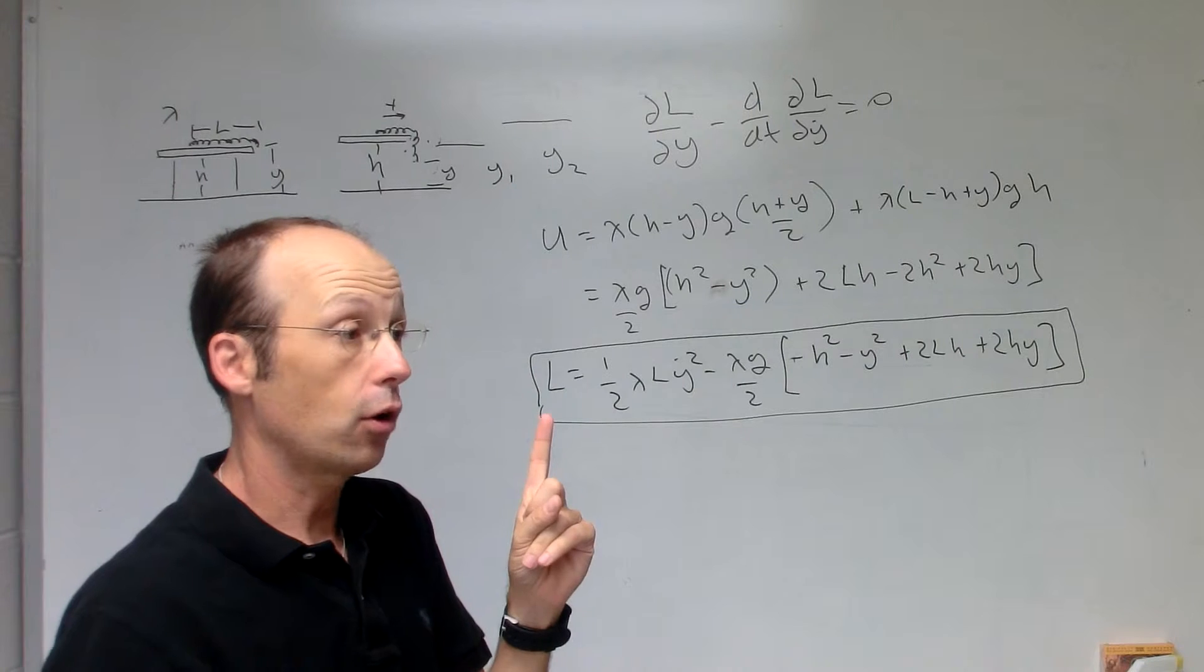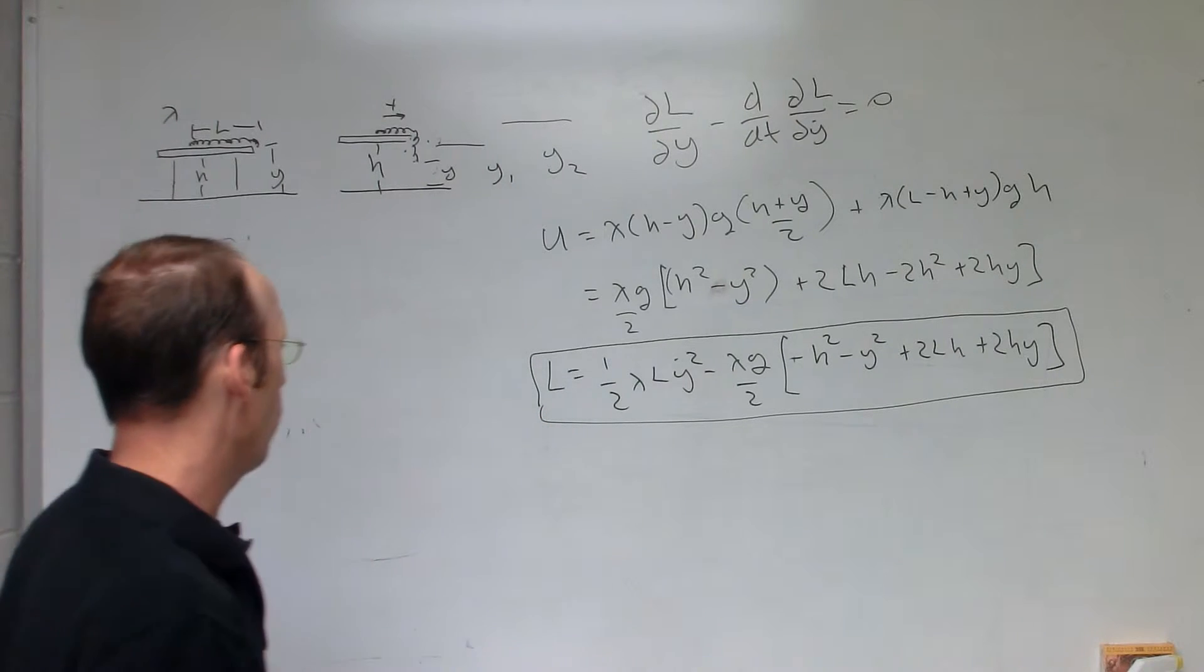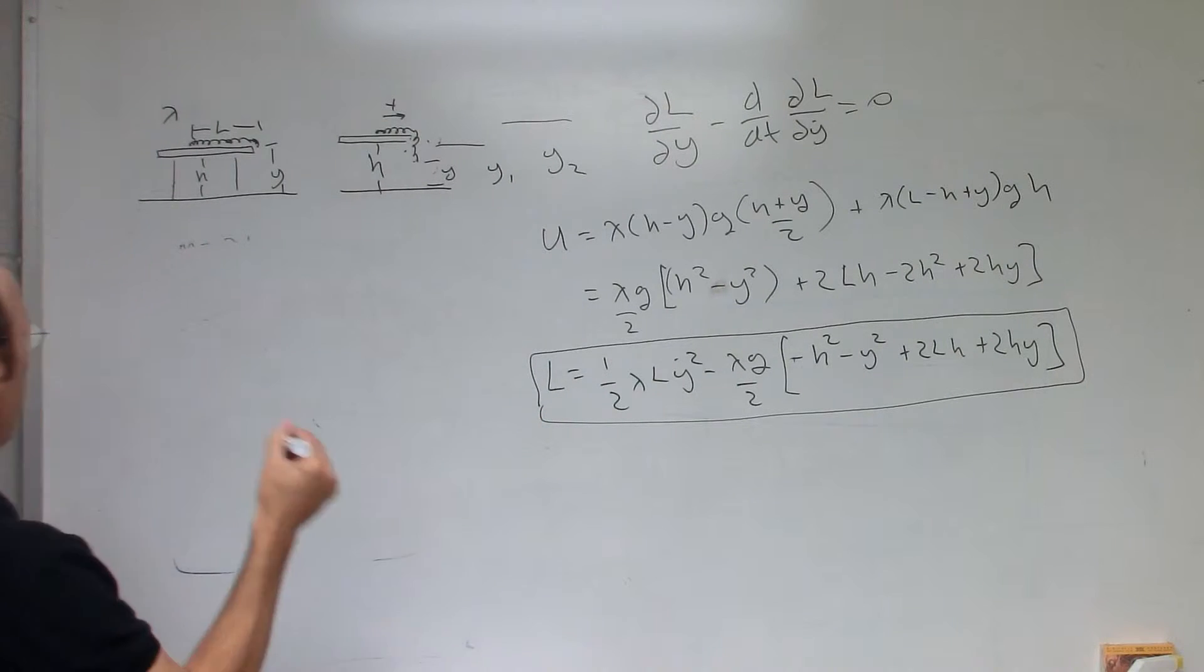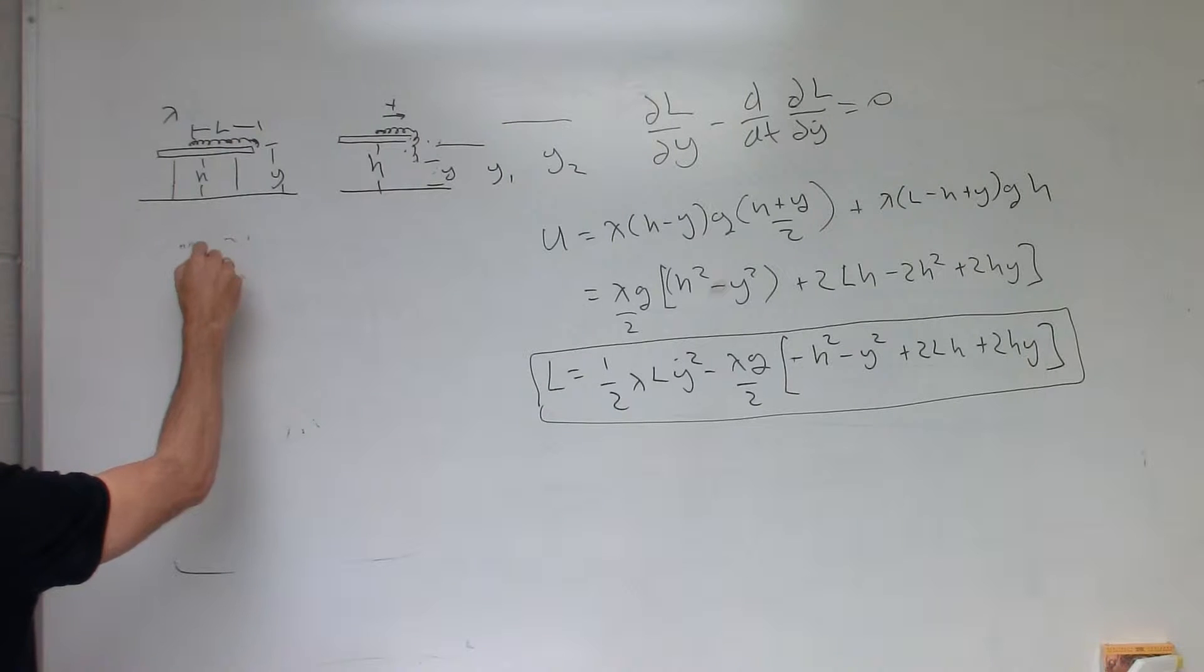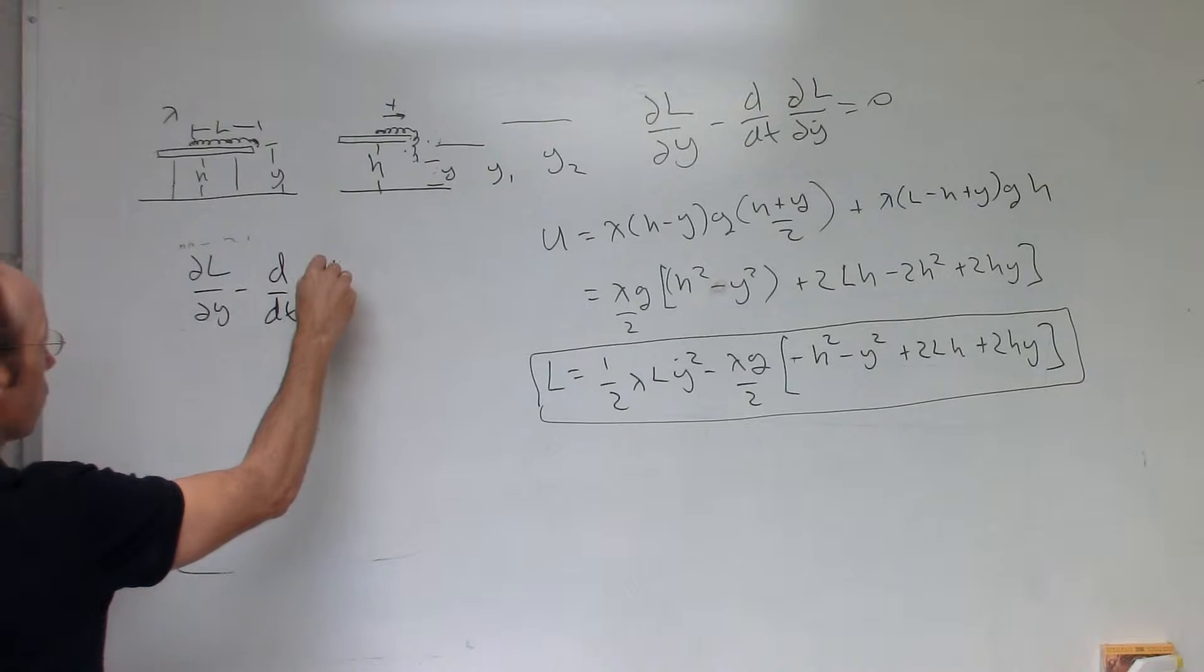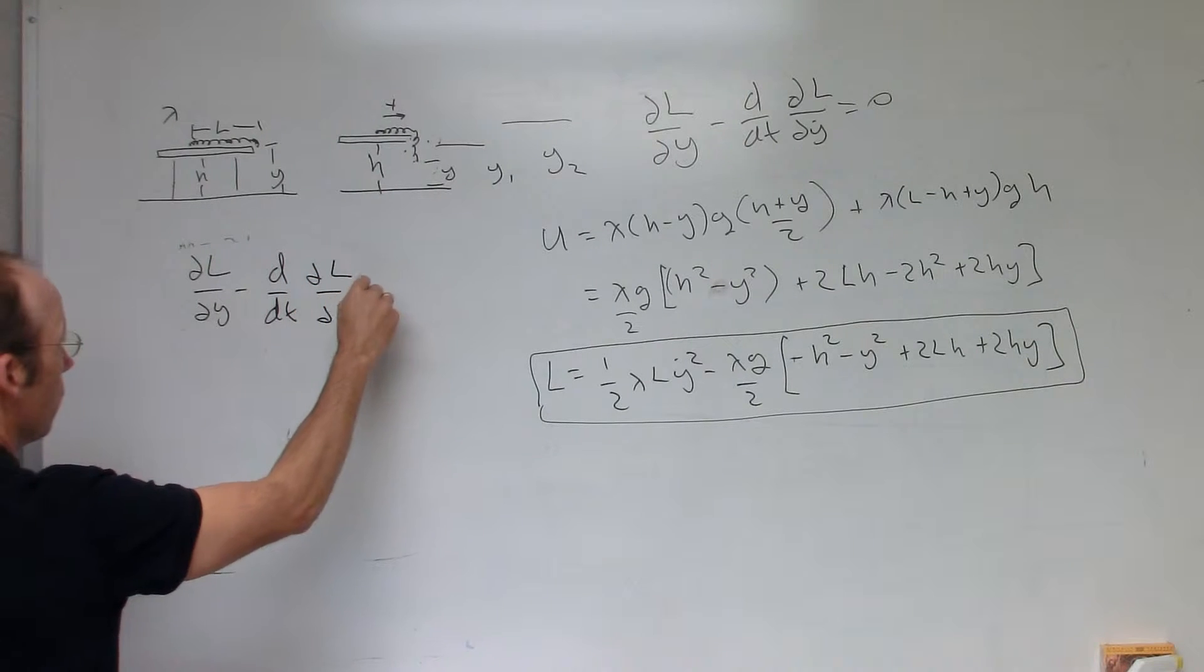Okay, but there's only one equation of motion because I only have one variable. So I'm going to say the Lagrangian says the partial of L with respect to y minus d dt partial of L with respect to y dot equals zero.